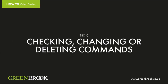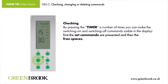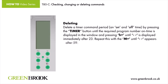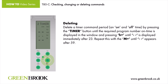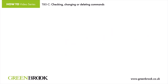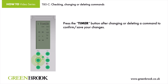Checking, changing, or deleting commands. By pressing the timer button a number of times, you can make the switching on and switching off commands visible in the display. The set commands are presented first, then the free spaces. Changing: you can change a switching command by making it appear on the display and pressing the Day, H Plus, and M Plus buttons accordingly. Deleting: delete a timer command by pressing the timer button until the required program number and on time is displayed, then pressing H Plus until dash-dash is displayed immediately after 23. Repeat with M Plus until dash-dash appears after 59. Repeat this sequence for the off mode. The deleted command then becomes available for reprogramming. Press the timer button after changing or deleting a command to confirm and save your changes.